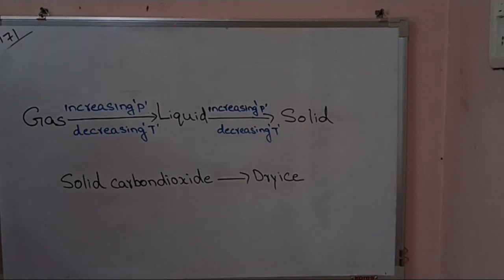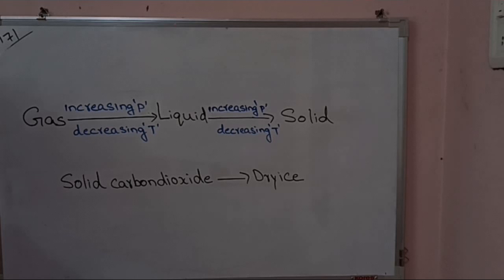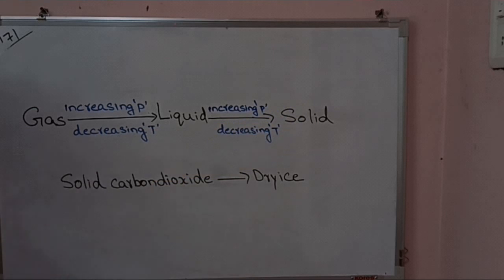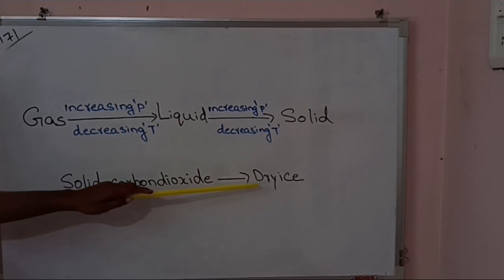On further increasing the pressure on liquid, it changes to solid. For example, on applying pressure on carbon dioxide gas, it changes to liquid carbon dioxide. The process of converting gas to liquid is called liquefaction of gas. On again applying pressure on liquid carbon dioxide, it changes to solid carbon dioxide, which is called dry ice.